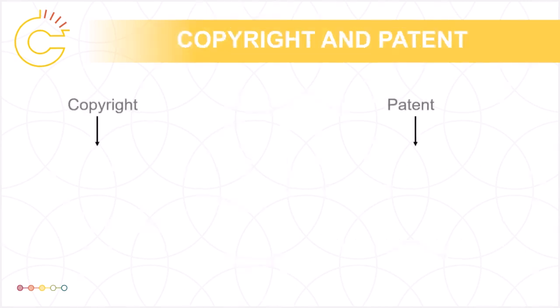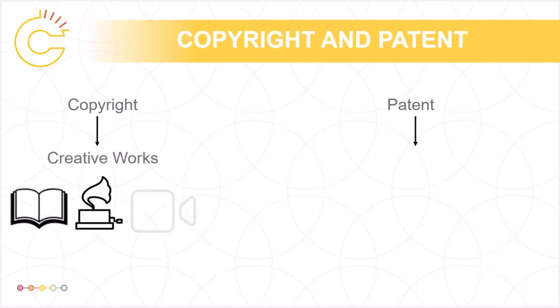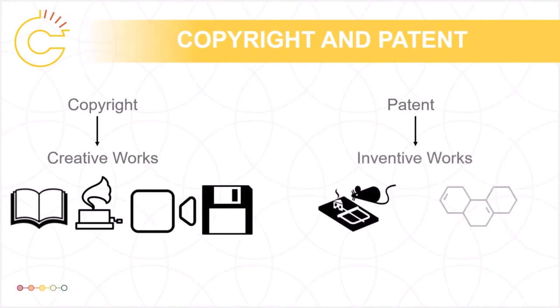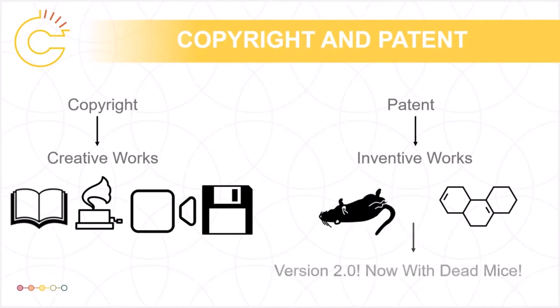Copyright and patent tend to be the two best known forms of IP. Traditionally, copyright has protected creative works — first written materials, and then other forms of creative expression like sound recordings, films, and even software. Patents protect inventive works, such as building a better mousetrap, and can also be issued for new chemical compositions, machines, or processes for developing new and better products or improvements to any of these.